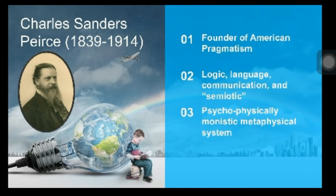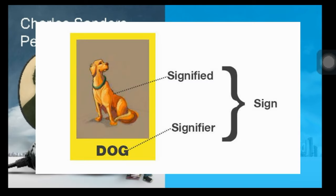The topics of Charles Peirce include logic, language, communication, and semiotics. Semiotics means the study of symbols and signs and how they are used.